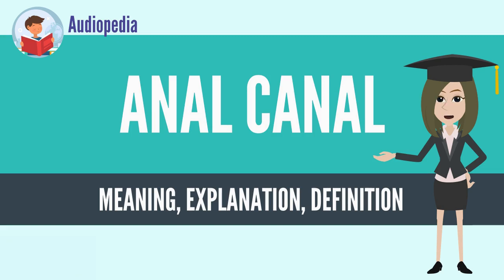In humans it is approximately 2.5 to 4 cm long, extending from the anorectal junction to the anus. It is directed downwards and backwards. It is surrounded by inner involuntary and outer voluntary sphincters which keep the lumen closed in the form of an anteroposterior slit.